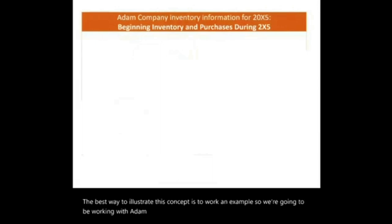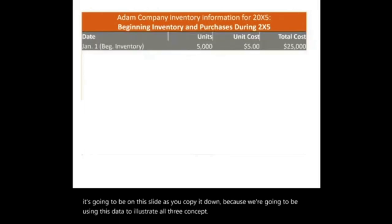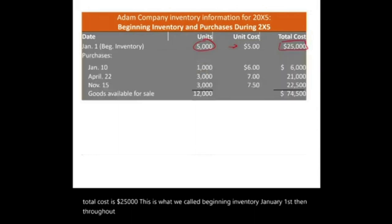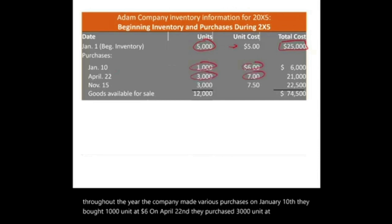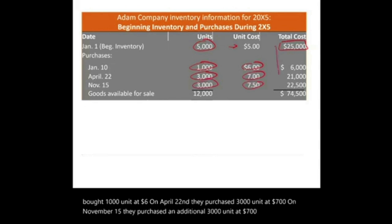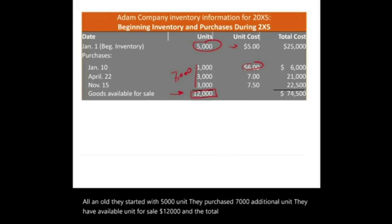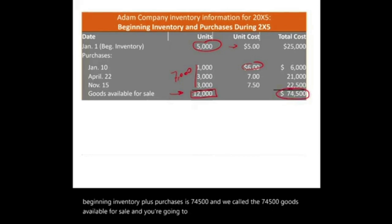We're going to work with Adam Inventory Information. Copy down what's on this slide because we're going to use this data to illustrate all three concepts. The company starts with beginning inventory of 5,000 units at $5 per unit, total cost $25,000, on January 1st. Throughout the year, they made various purchases: January 10th, 1,000 units at $6; April 22nd, 3,000 units at $7; November 15th, 3,000 units at $7.50. In total, they started with 5,000 units, purchased 7,000 additional units, giving 12,000 units available for sale at a total cost of $74,500 — goods available for sale.